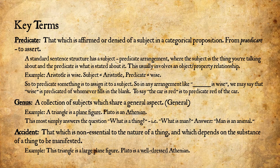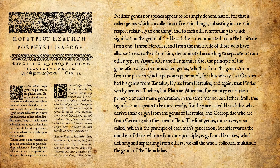A triangle could be a large or small plane figure — that doesn't change what it is. Plato is a well-dressed Athenian — that is an accident of Plato. Tomorrow he might be wearing jeans with holes to cut the grass; he would still be Plato the Athenian. Being well-dressed is an accident; it does not affect what he is.